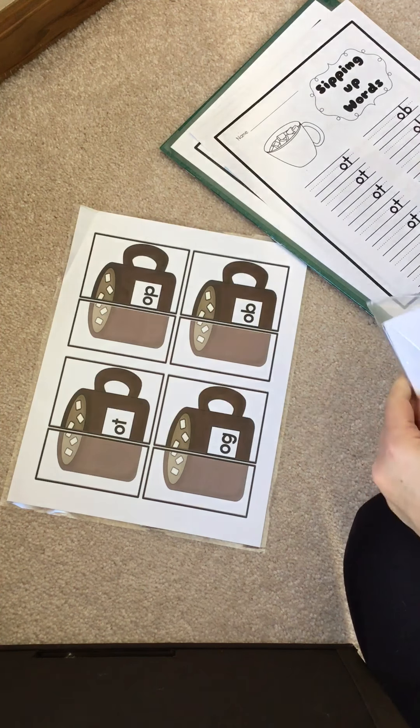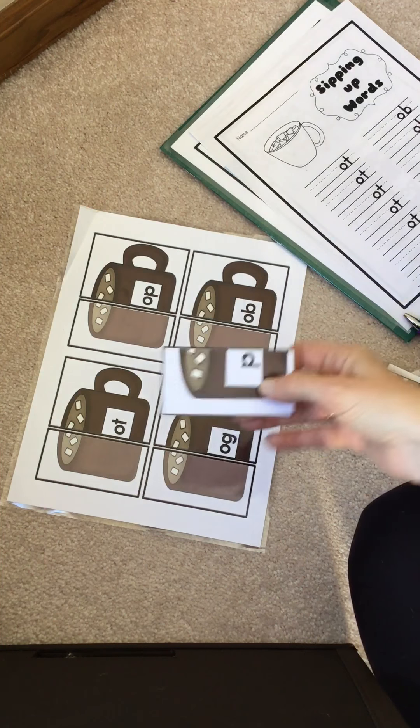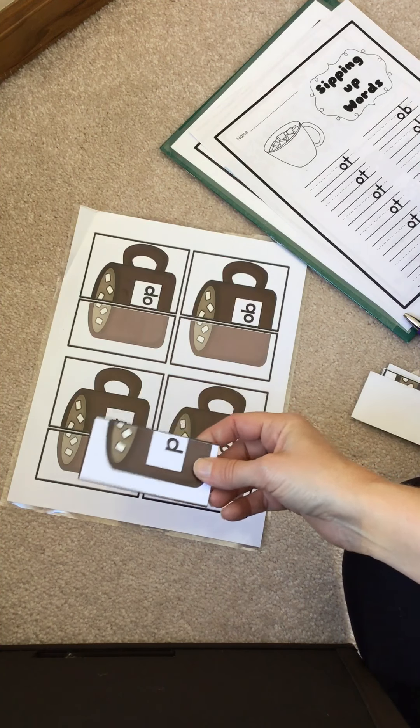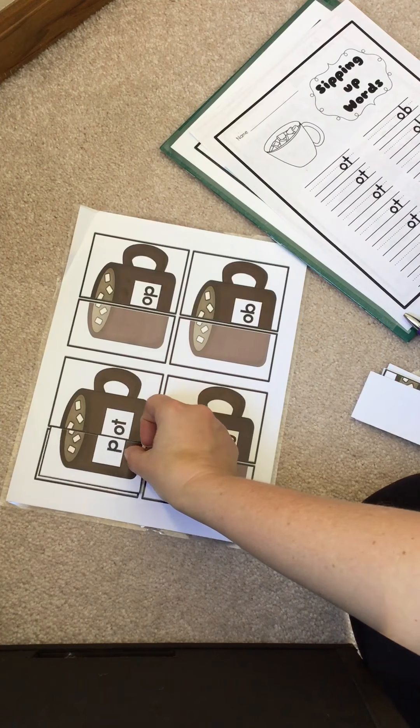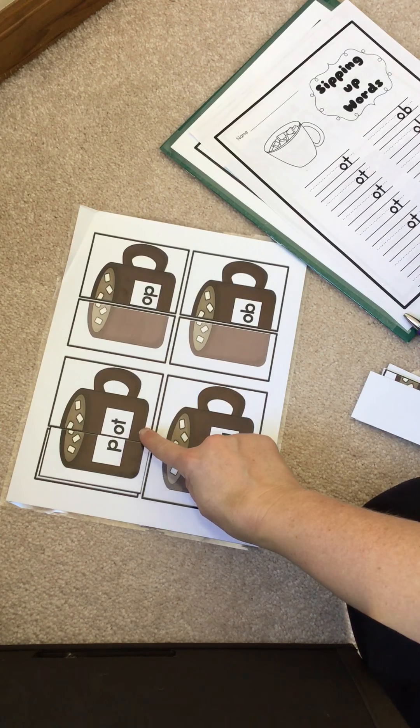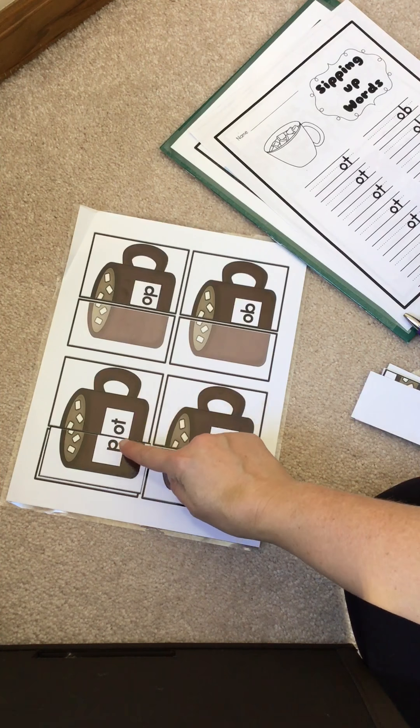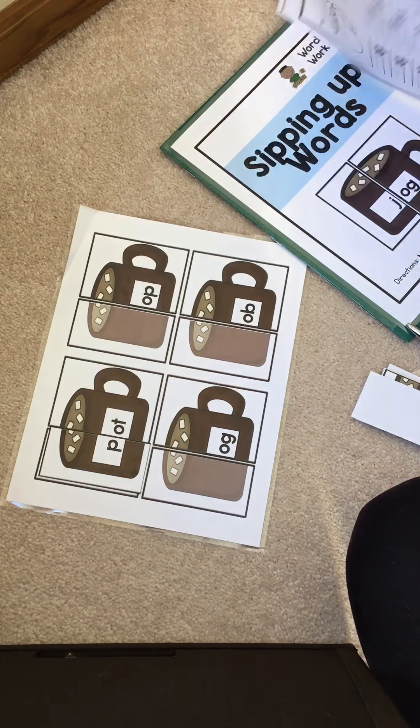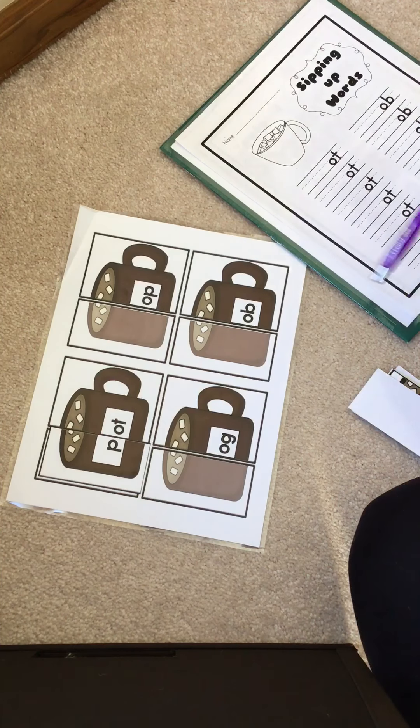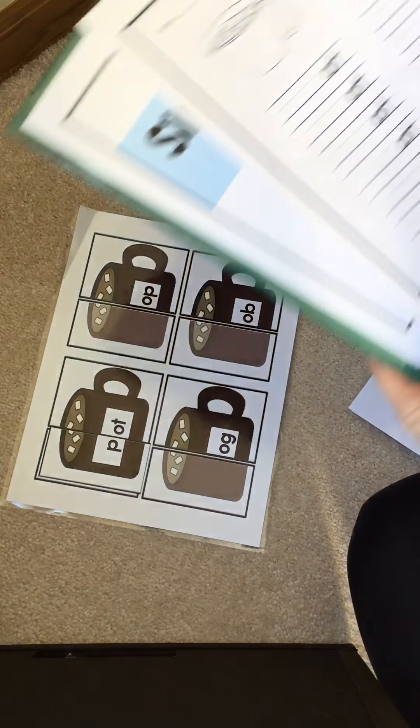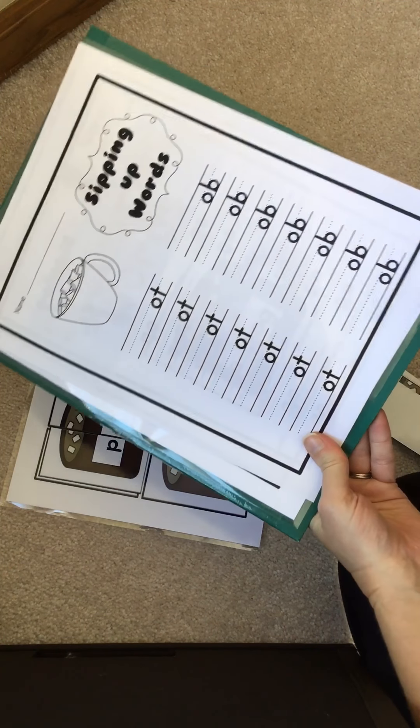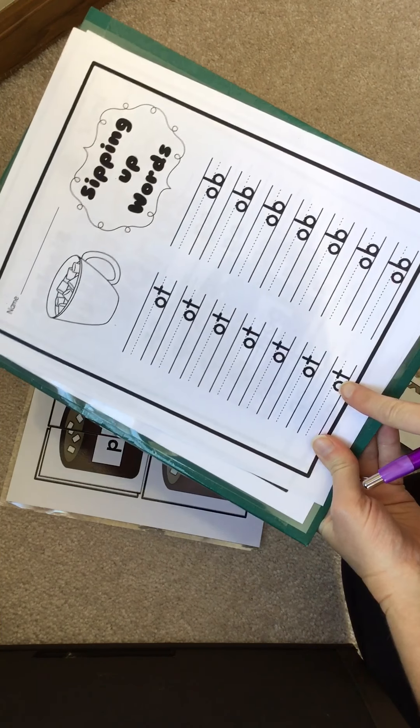Here's 'puh puh,' let's try here. 'Puh ot, pot, pot,' yep, that's a real word. So on my worksheet, I just noticed all of my 'ot' words will go here. All the ones that I make on this hot cocoa, all of my 'ob' words will go here that I make over here.